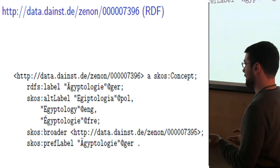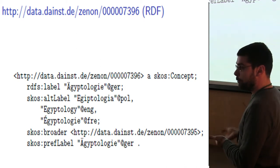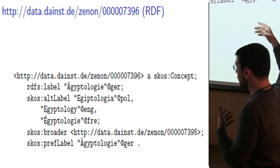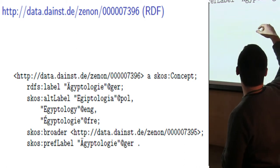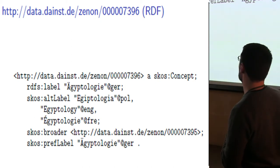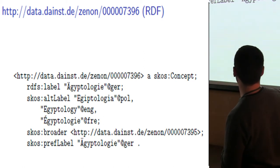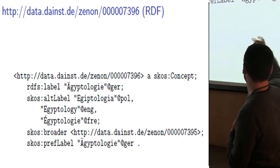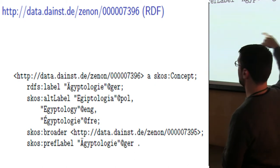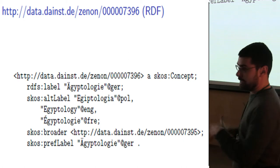RDF is a language to express things semantically — they are made of subject, predicate, and object. So in this case, the URI — which doesn't exist yet but might actually be there in the future — is a concept, and has different labels in different languages. There is a preferred label and then alternative labels. 'Epigraphy' in German is the preferred label, and then we have it in the different other languages. And the broader relationship — we say the broader concept for this one is this other one, which is 'archaeology'.